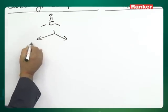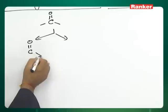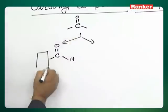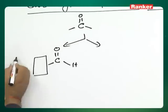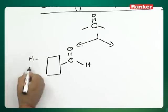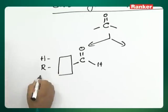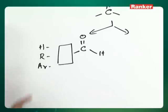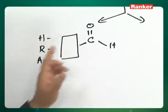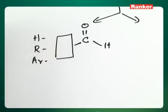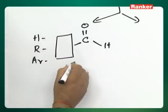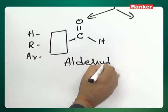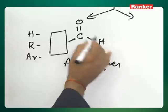If this carbonyl group has hydrogen on one side, the other side can have an option. That option can be a hydrogen, an alkyl group, or an aromatic group — it can be aliphatic, aromatic, or hydrogen. All these hydrogen-containing carbonyl compounds are called aldehydes. One side must have a hydrogen.